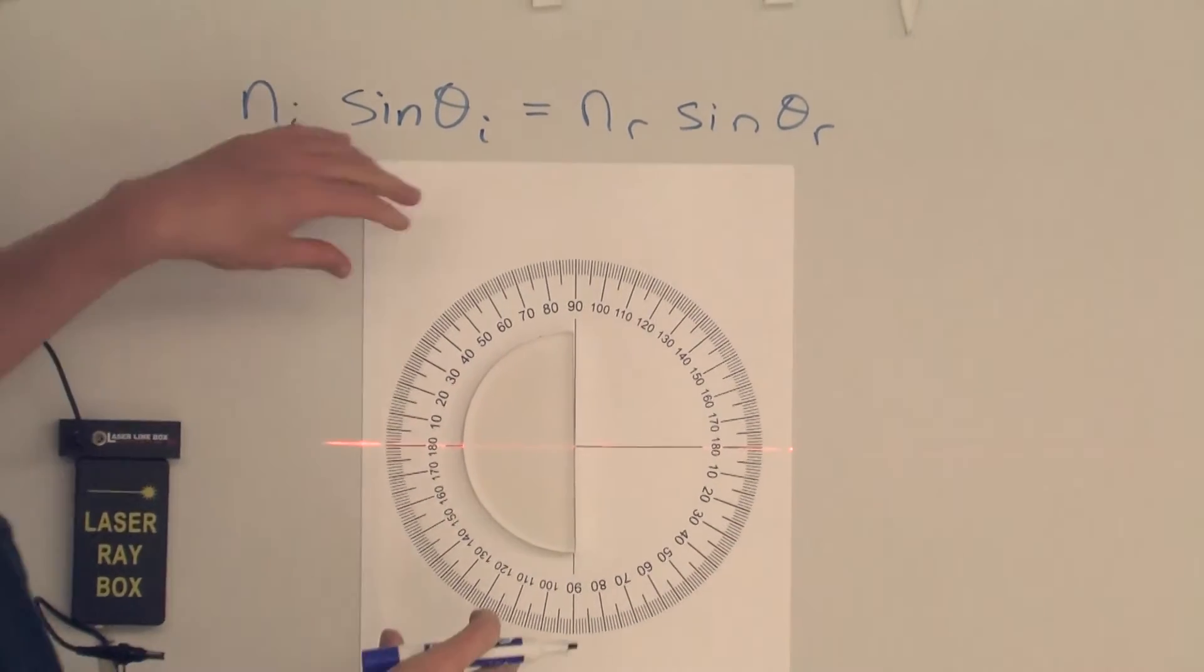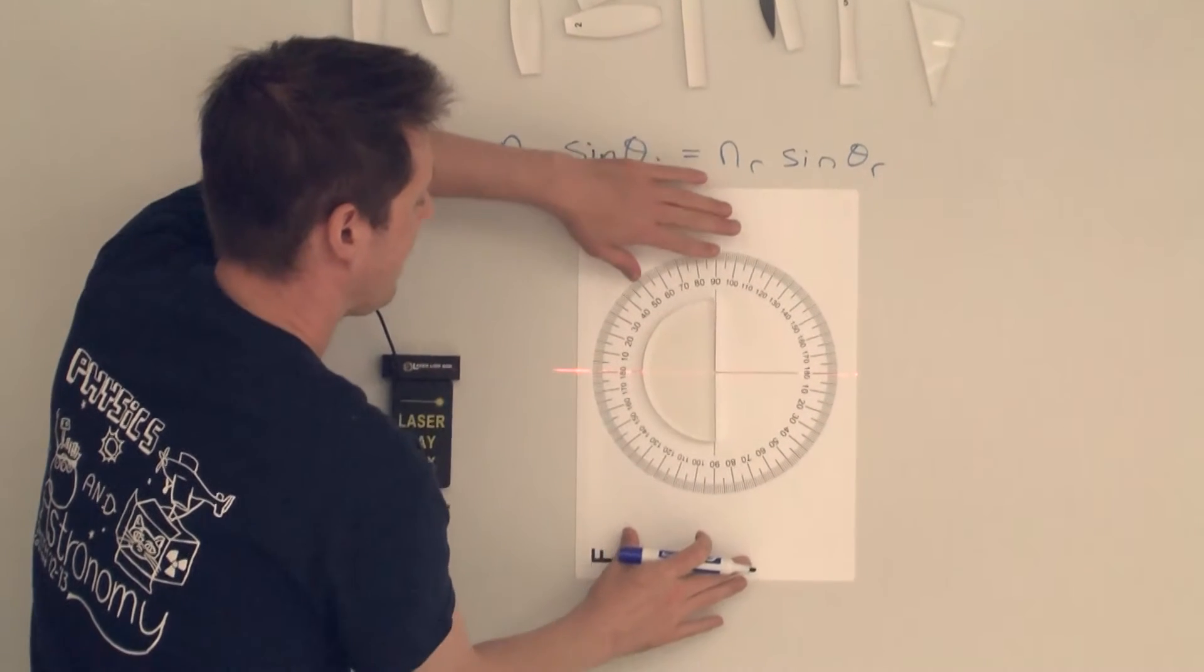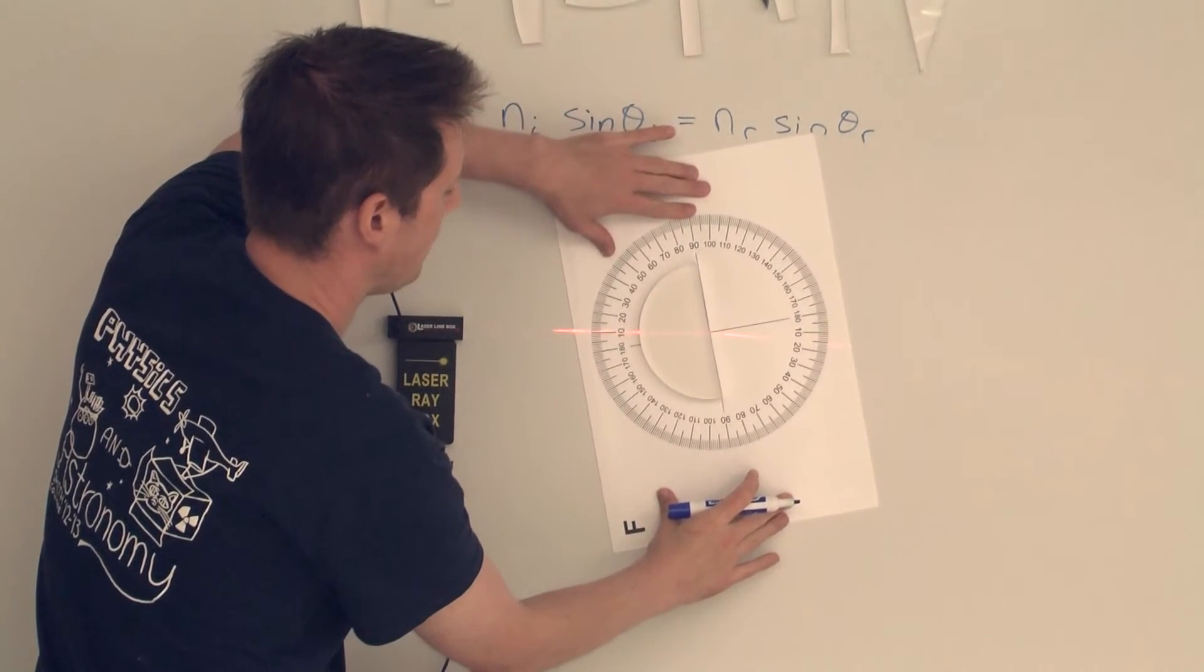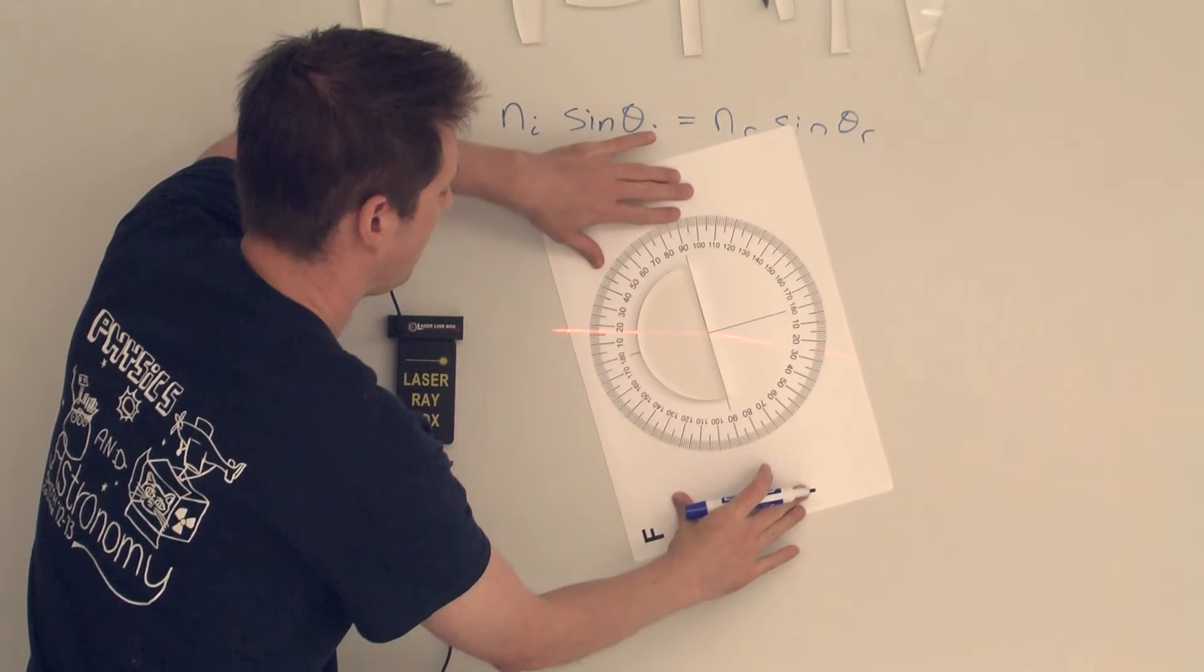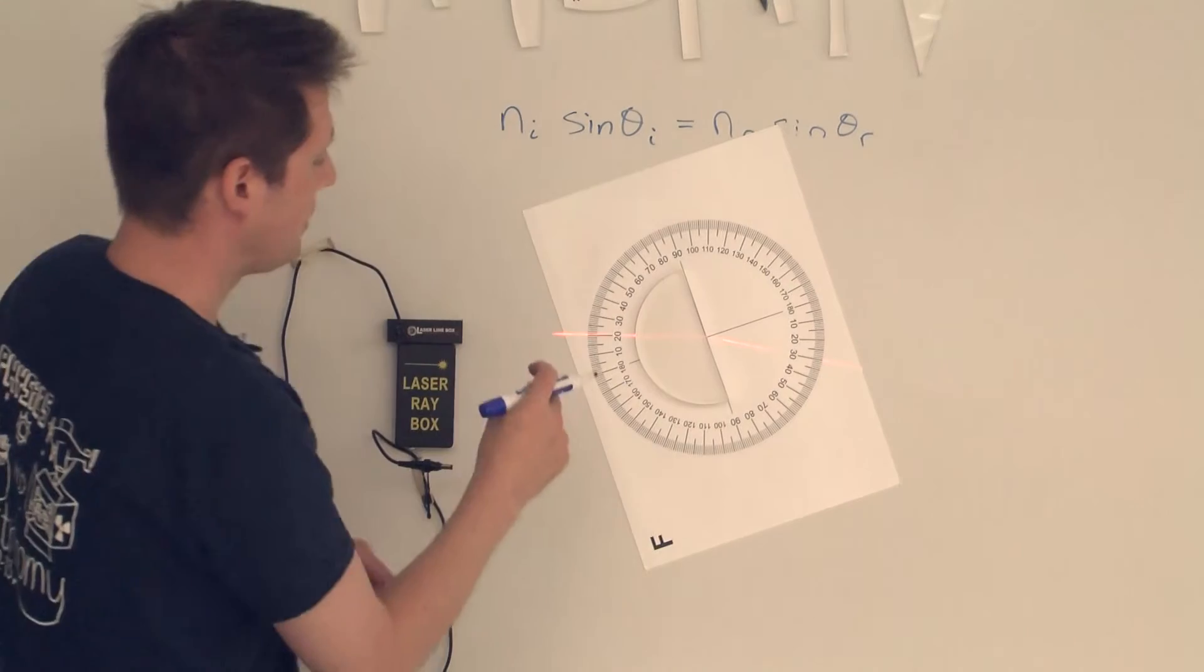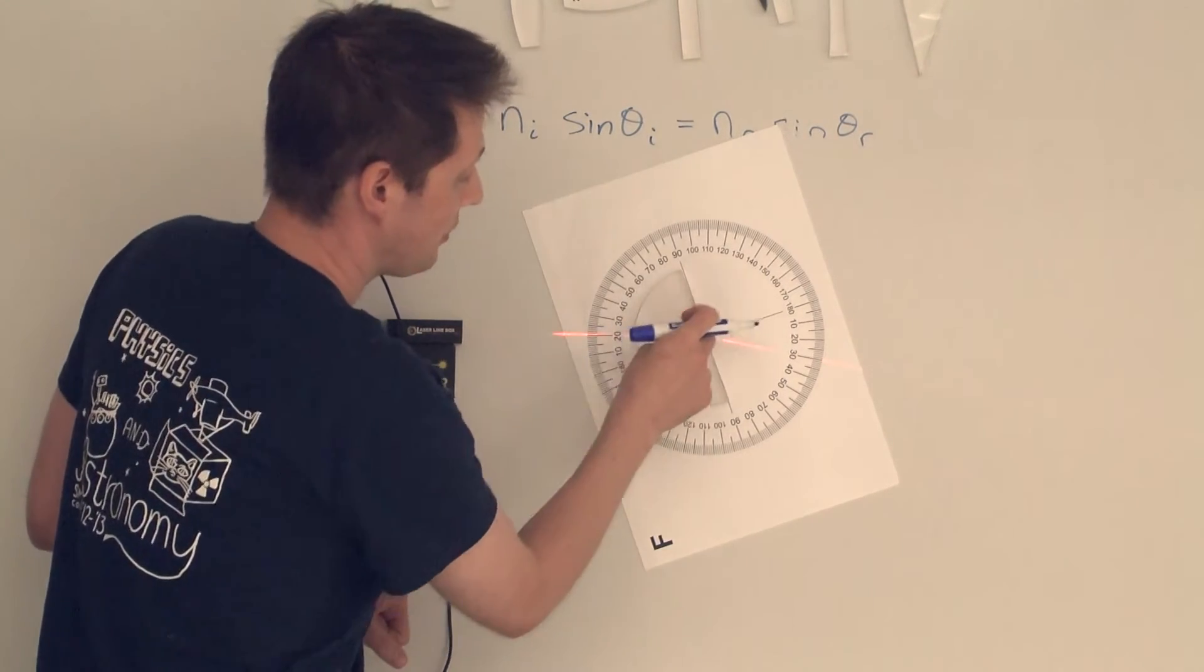Now what we'll see, since the index of refraction for, for example, plastic and air are different, that when we rotate our boundary, for example, if I make the ray of light come in at 20 degrees angle to the normal,